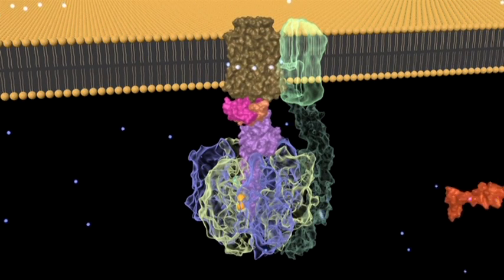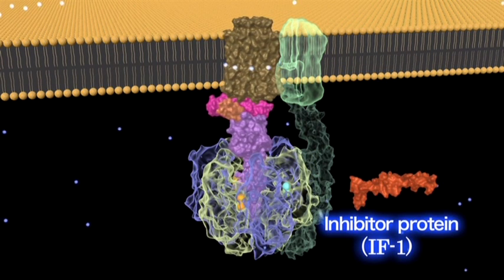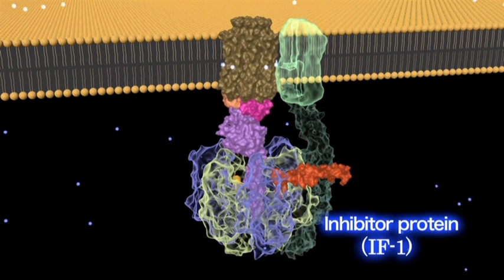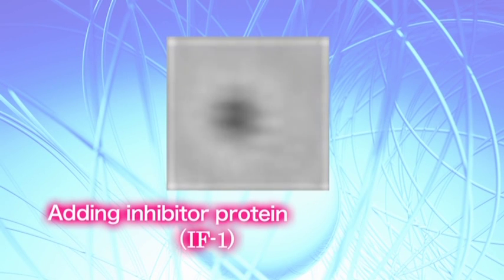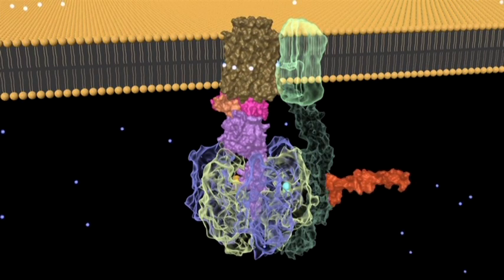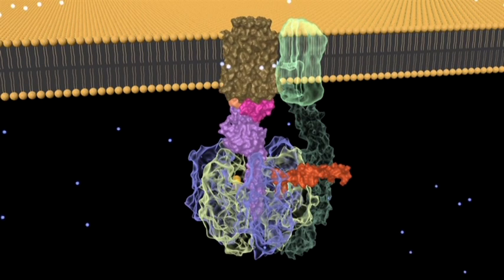In the case of humans, a protein factor binds to the motor from the outside to inhibit rotation. These test images show that rotation stops when an inhibitor protein is added. It is believed that this mechanism controls the useless consumption of ATP.